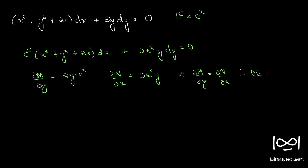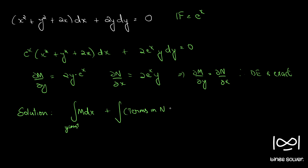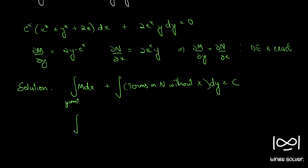The solution can be written as: integral of M dx (treating y as constant) plus integral of terms in N without x times dy, equal to a constant. The integral of M dx is e^x times (x squared plus y squared plus 2x) dx, and the terms in N without x is 0, so the second integral vanishes and equals c.